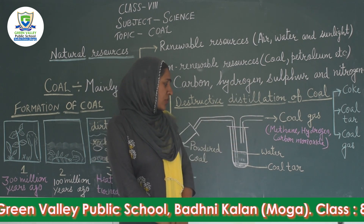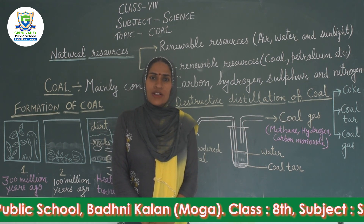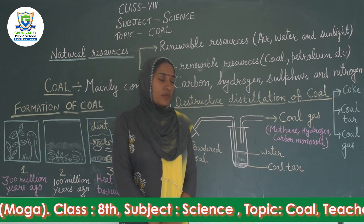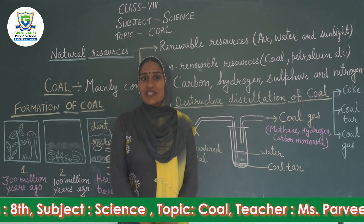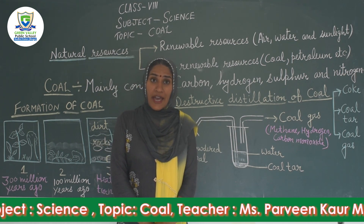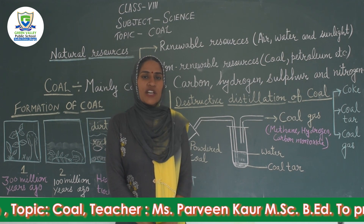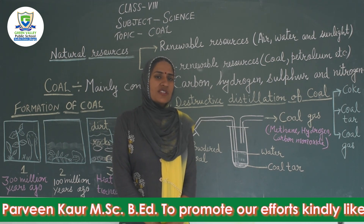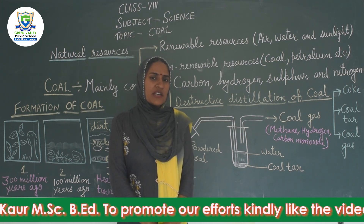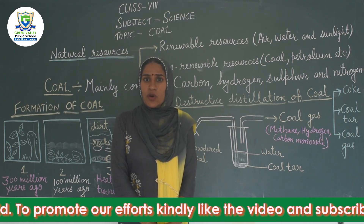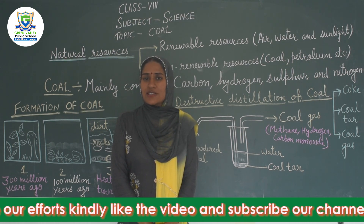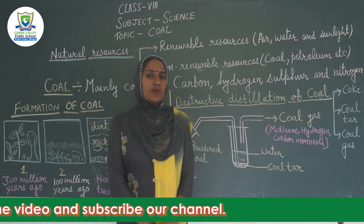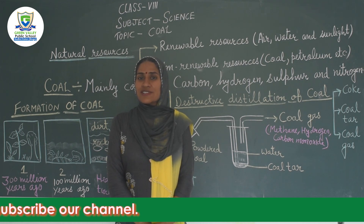Next, let's talk about coal tar. Coal tar is a black thick liquid which is a product of destructive distillation of coal. This coal tar is made up of near about 200 compounds, and these compounds are used in making paints, dyes, drugs, and naphthalene balls. Naphthalene balls are used at home to protect our clothes from the attack of moths and insects.